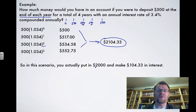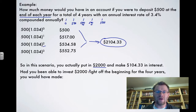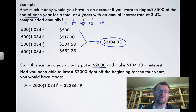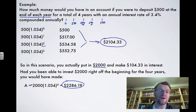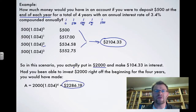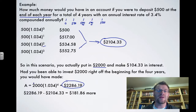In this scenario you put in a total of $2,000 (four payments of $500) and earned $104.33 in interest. Had you been able to invest the full $2,000 right at the beginning for four years, you would have earned $2,000 × 1.034⁴ = $2,286.19. The only reason people don't do this is because they don't have the full $2,000 up front — they can afford $500 at a time. So by investing in installments you would have made $181.86 less.